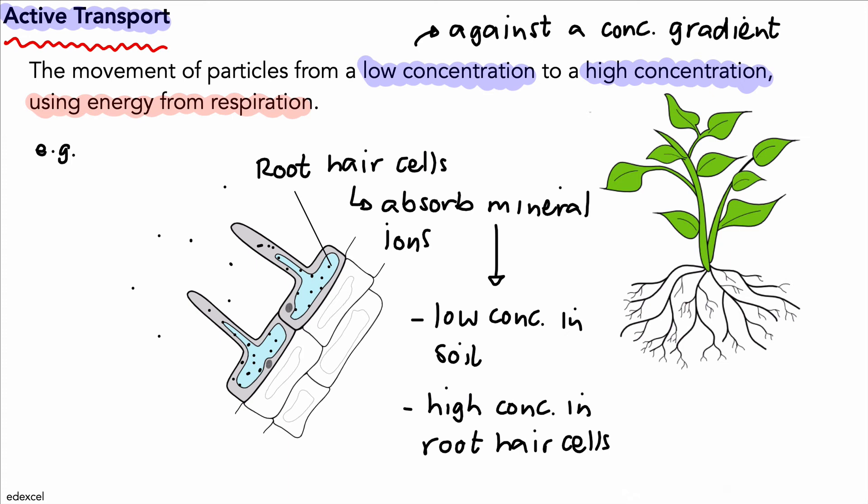That's what active transport is, and there's a common example. There's one other example that's quite common, and that's the absorption of nutrients from digested food in the small intestine, for example amino acids or glucose. This involves actively transporting those nutrients in.